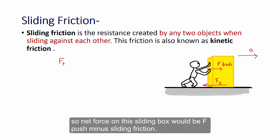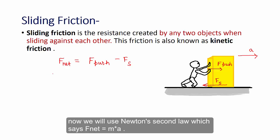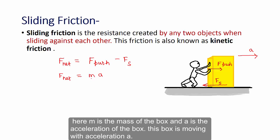So net force on this sliding box would be F push minus sliding friction. Now we will use Newton's second law which says F net equals M times A. Here M is the mass of the box and A is the acceleration of the box.